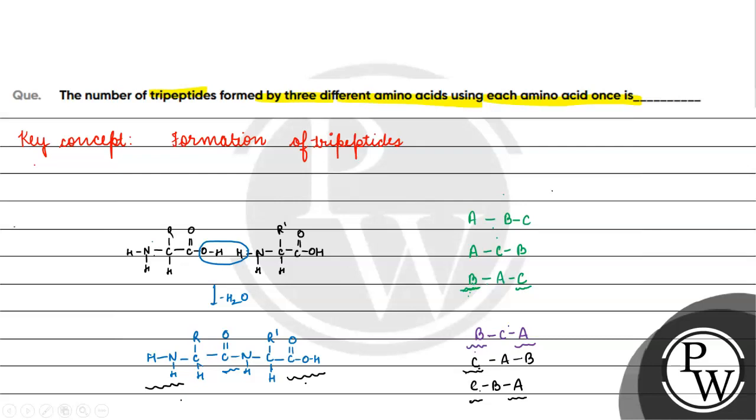So total कितने number of possibilities हो सकती है हमारे पास? ये 6. The answer for this question is 6. I hope you understood it well. Thank you, all the best.